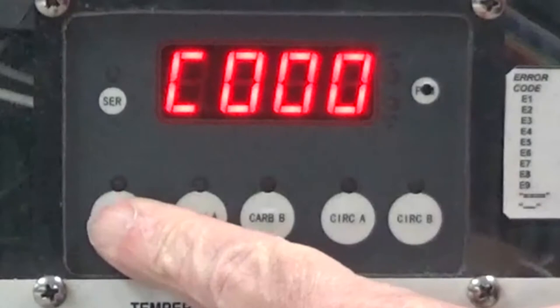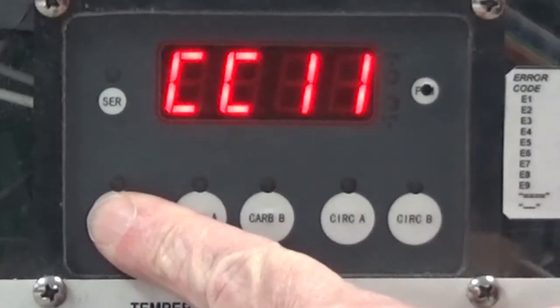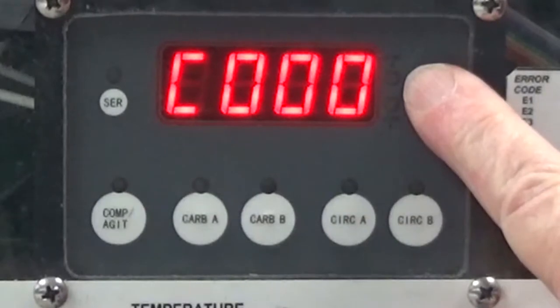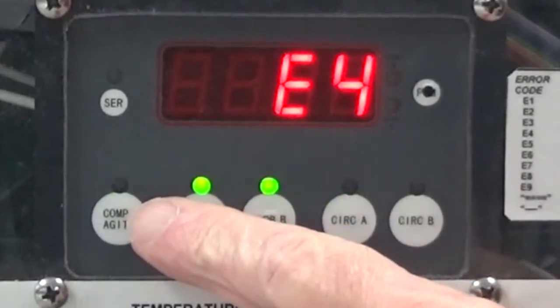Now press and hold the compressor agitator button. The display should read CC11. If it does, hold the PGM button in until the E4 is displayed on the screen. The compressor should start at this point.